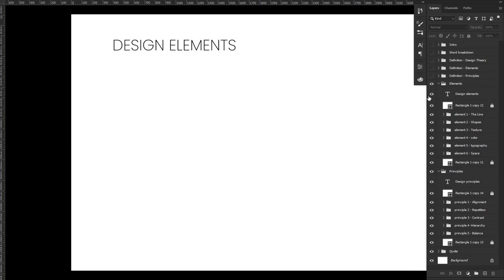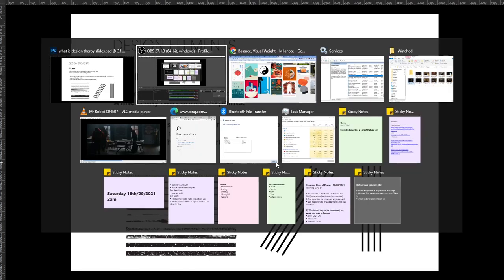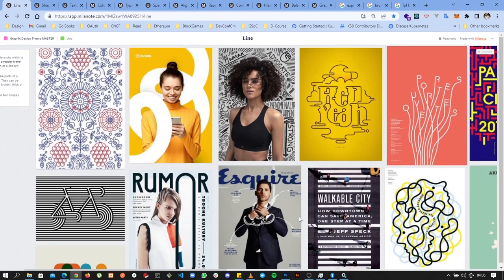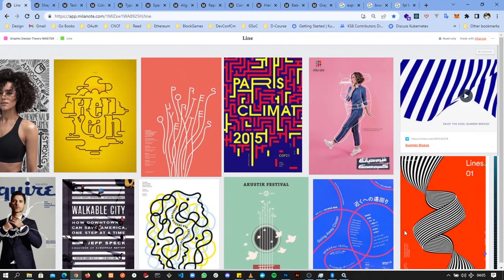The first and most basic element of design is the line. A line is any two connected points. Lines can be straight, curved, smooth, rough, continuous, or broken — thick or even thin. Lines can also be horizontal, vertical, or diagonal. You can see how lines have been used deliberately throughout various designs by designers.